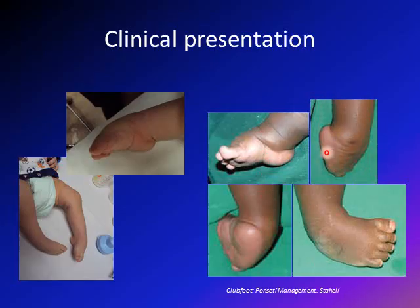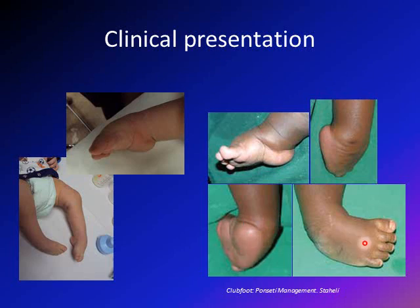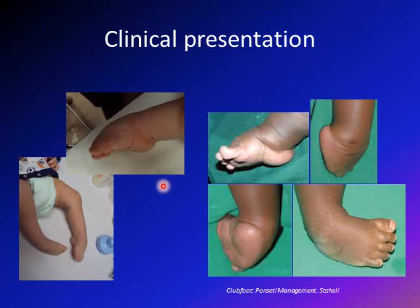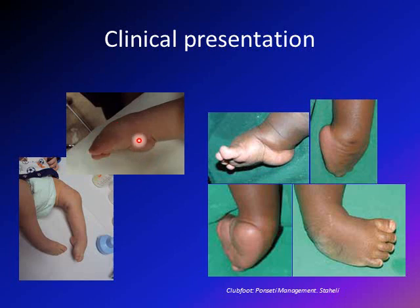These four pictures again clearly show equinus — the ankle and foot pointing downward rather than at 90 degrees to the tibia — very obvious hindfoot varus, with the hindfoot pointing medially rather than straight down, forefoot adduction with the forefoot pointing medially, and cavus. This next picture shows a child with bilateral clubfeet: equinus is obvious, the high arched foot with the deep crease is visible, the forefoot is pointing inward relative to the hindfoot, and the hindfoot is pointing medially relative to the leg.